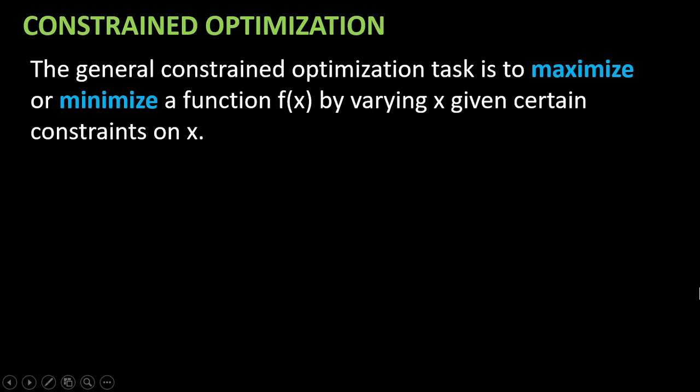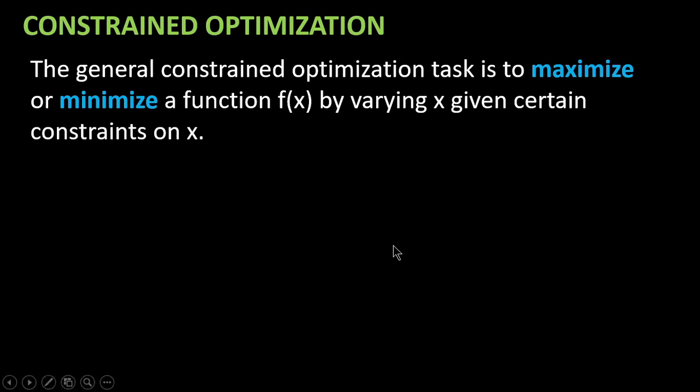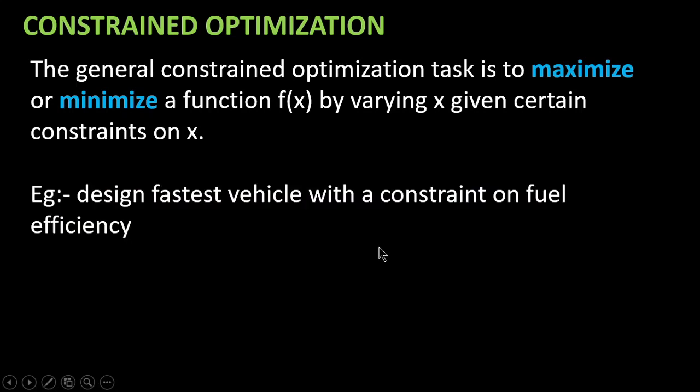The general constraint optimization task is to maximize or minimize a function f of x by varying x, given certain constraints on x. In machine learning, we try to minimize the cost function by varying the weight and bias. For example, design the fastest vehicle with a constraint on fuel efficiency.